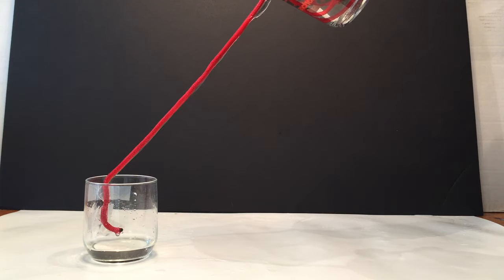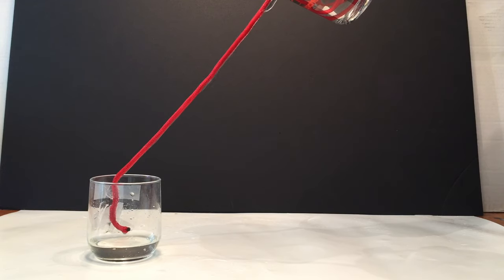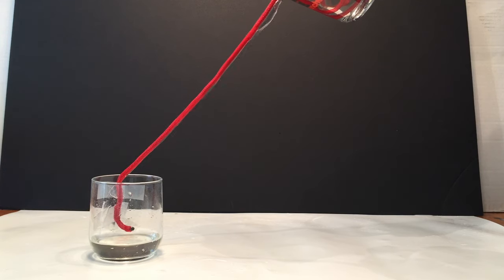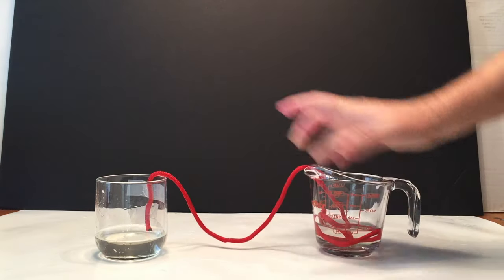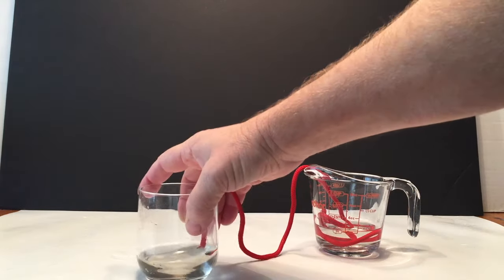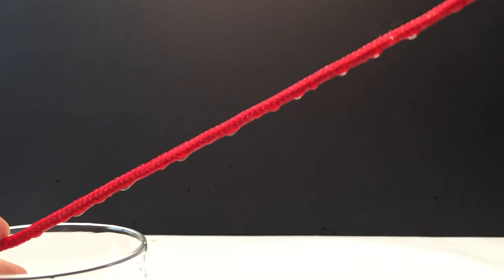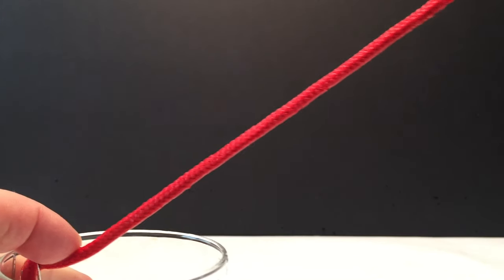Gravity pulls the water down towards the earth. Adhesion attracts the water to other objects. And cohesion attracts the water molecules to other water molecules. In this experiment, adhesion attracts the water to the string, and cohesion keeps the water flowing in a steady stream.